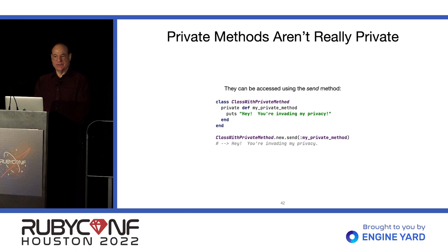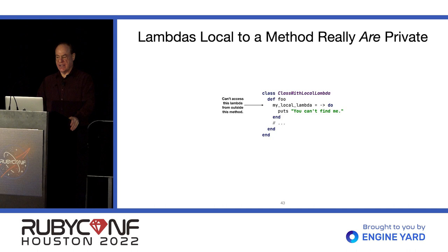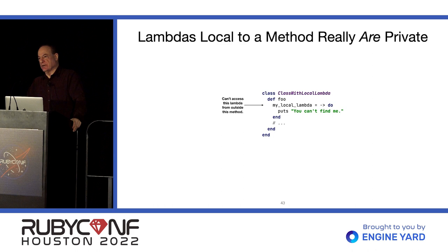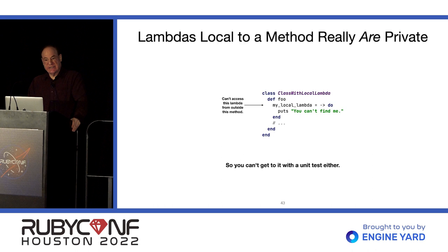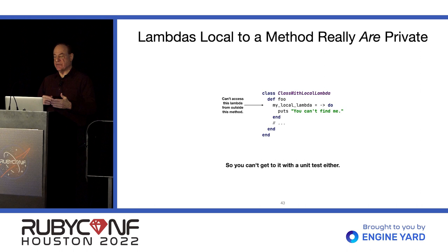Private methods are not really private — you can call send to call them. If you want something to be really private, you could put it in a Lambda and assign it to a local variable, which would be totally invisible to the outside. Maybe you don't want library users to use things you're going to change later — a Lambda would work for that. Unfortunately, it also means you can't get to it with a unit test. So if you really need to unit test the behavior of that Lambda directly and not just its enclosing method, you're out of luck — you probably want to make it a method instead.